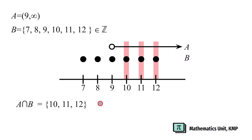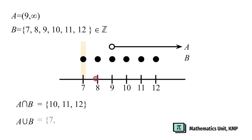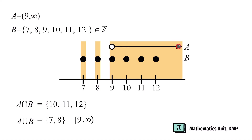We write down the solution set for A intersect B. For A union B, union means all elements belonging to both A and B. We start with 7, 8, and 9 as discrete integers, then all real numbers to the right including 10, 11, and 12. So we represent A union B as {7, 8} union [9, positive infinity), combining these two with the union symbol.